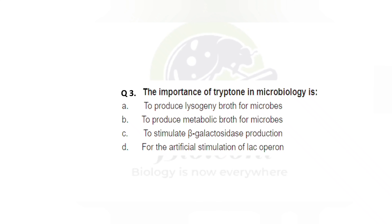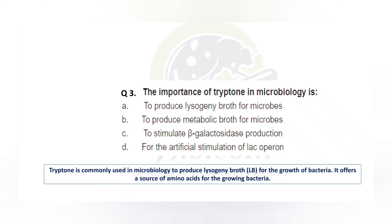Let's solve another question: what is the importance of tryptone in microbiology? Basically, tryptone is a key ingredient of lysogenic growth medium used for the culture of different microorganisms including bacteria like different strains of Bacillus and also E. coli. The role of tryptone is to provide the essential amino acids required for the growth of that particular bacteria. The answer is option A: tryptone produces lysogenic growth for microbes, favoring the growth of microorganisms including E. coli.